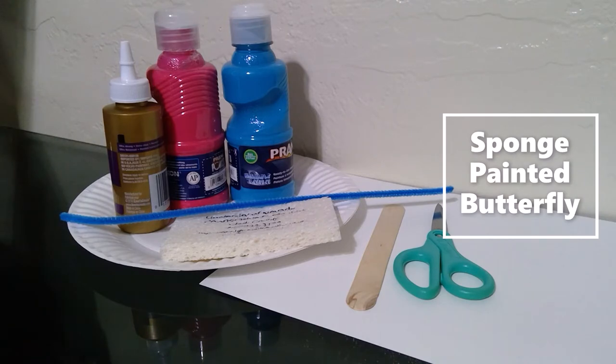Let's get started. The first thing we're going to do is make our butterfly. We're going to grab our paper and fold it in half. Remember, parents, you could help them trace one from a template or you could make your own.